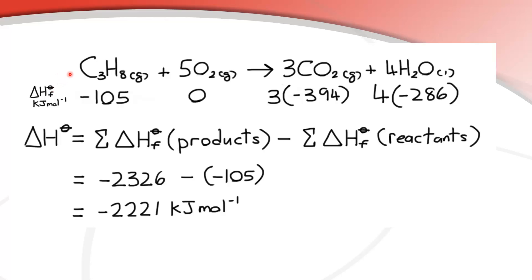Let's try an example. We're going to use delta Hf, standard enthalpy of formation values, to calculate the overall enthalpy change for this reaction. We have C3H8, which is propane, burning in oxygen gas to give carbon dioxide and water. I've written in the standard enthalpy change of formation values from the data booklet: for propane it's negative 105 kJ/mol, oxygen is zero because oxygen is an element, and carbon dioxide is negative 394 kJ/mol.